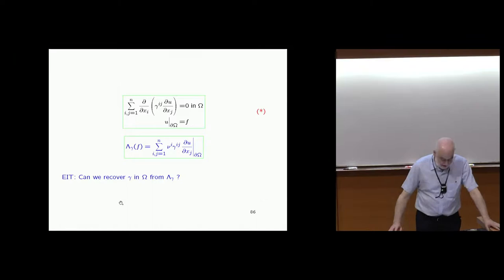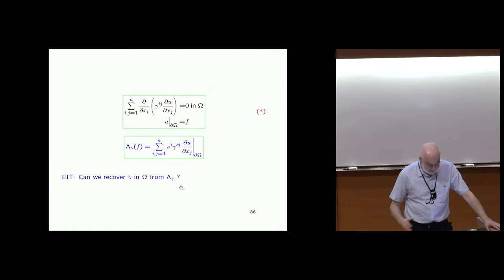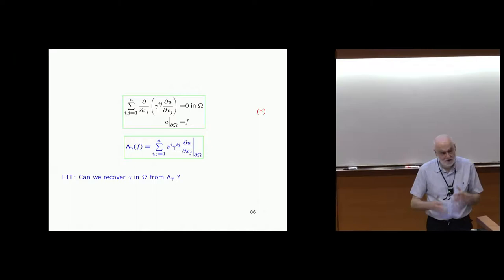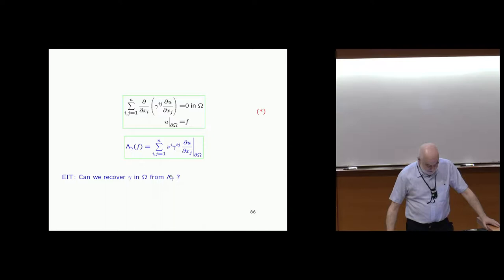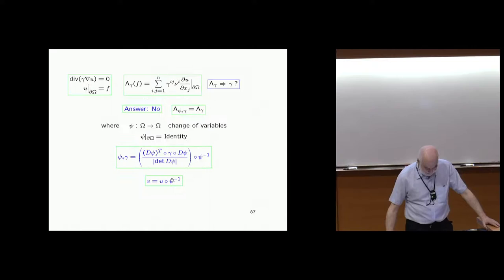The question is the same: can we recover this matrix in omega from the Dirichlet-to-Neumann map? Of course, this is an idealized problem — like the Radon transform, you don't have information for all lines. But the hope is that you can solve this problem, and then approximate the conductivity when you have a finite number of measurements.